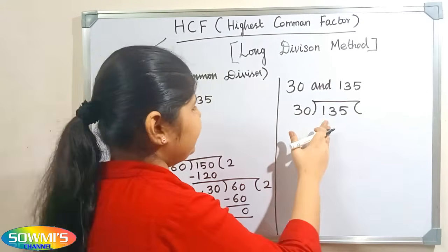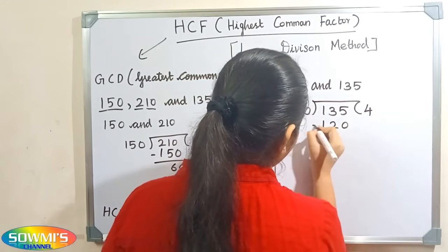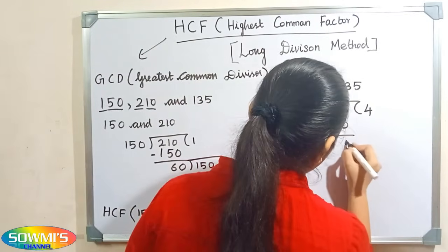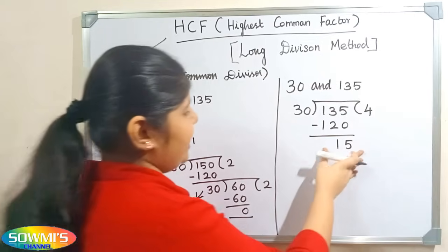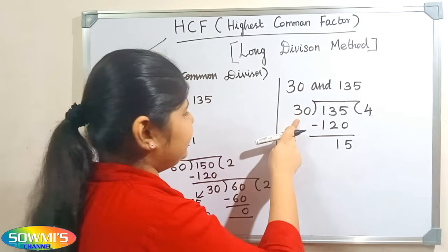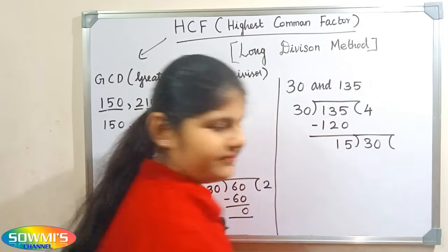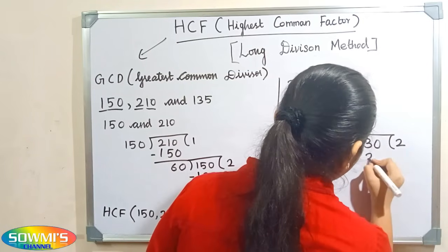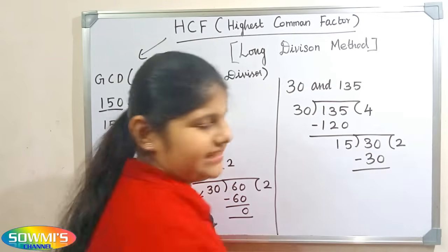Let us divide 135 by 30. Now we will subtract it. Here the remainder is 15, so we will repeat the process again. Here 15 will become the new divisor and 30 will become the new dividend. Now we will subtract it: 30 minus 30 will be 0.